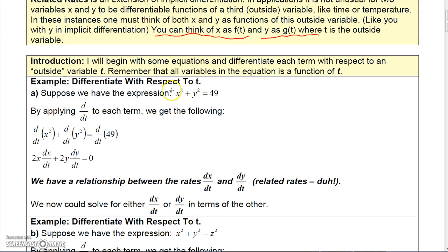Let's start with a simple expression: x² + y² = 49. We take the derivative of each term with respect to the outside variable t, applying d/dt to each term. When we take the derivative of x² with respect to t, we get 2x, but we have to apply the chain rule because x is a function of t — we're not differentiating with respect to x but with respect to t, so we must assume x is a function of t.